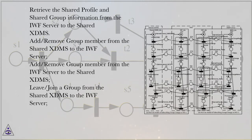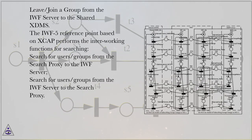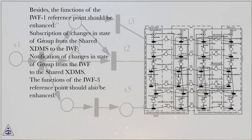Retrieve the public profile and group information from the shared XDMS to the IWF server. Retrieve the shared profile and shared group information from the IWF server to the shared XDMS. Add/remove group member from the shared XDMS to the IWF server. Add/remove group member from the IWF server to the shared XDMS. Leave/join a group from the shared XDMS to the IWF server. Leave/join a group from the IWF server to the shared XDMS. The IWF5 reference point based on XCAP performs the interworking functions for searching: search for users/groups from the search proxy to the IWF server, and search for users/groups from the IWF server to the search proxy.